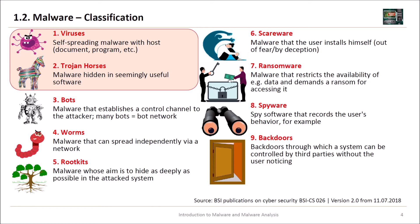Then we have ransomware — malware that restricts the availability of data and demands a ransom for accessing it. Usually ransomware encrypts your files and then wants bitcoins, for example, to give you the key to decrypt them. Then we have spyware — spy software that records the user's behavior. And finally we have backdoors, which usually come with Trojan horses into your system and allow a system to be controlled by third parties without the user noticing.